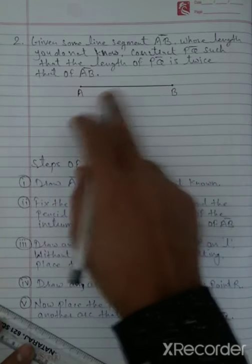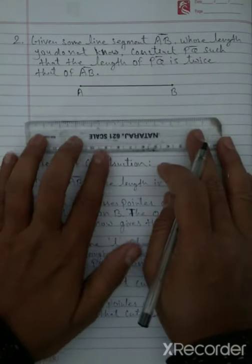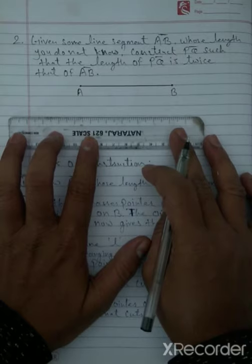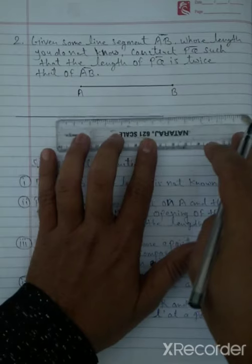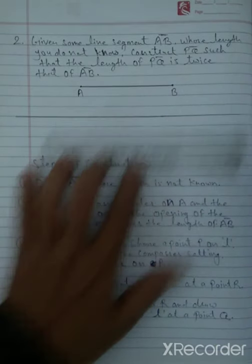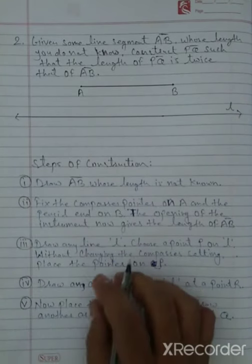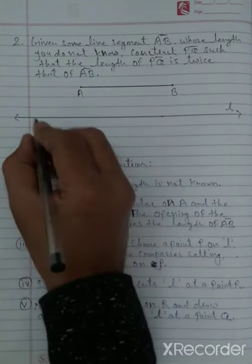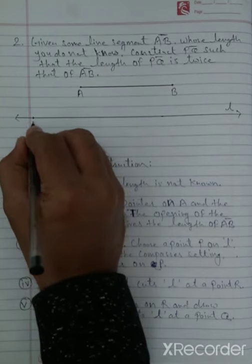In Step 2, we will copy this line segment first. We draw a line l, similar to Question 1. This is our line l. We choose a point on line l — here I am choosing point P.